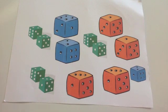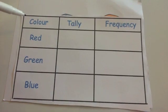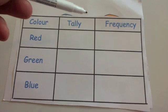So if we wanted to do a tally chart to organize this data, what I would do is I would create something like this where I would have color, red, green and blue, tally and frequency.